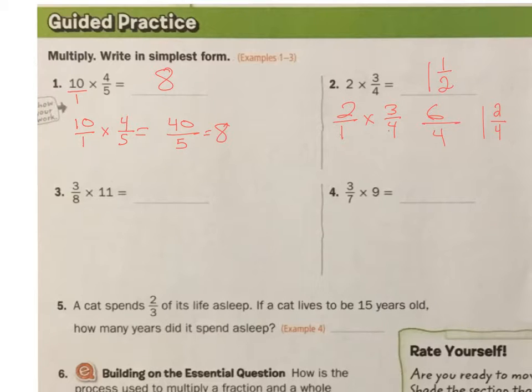Number 3. 3 eighths times 11 over 1. Now I just go across. 3 times 11 is 33. 8 times 1 is 8. How many eighths go into 33? Well, 4. And then that leaves me with 1 eighth. 4 and 1 eighth.